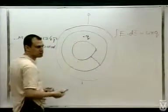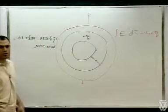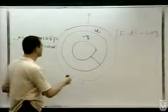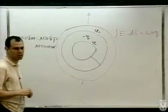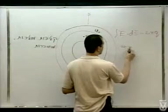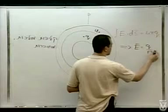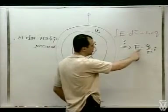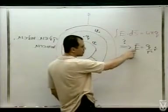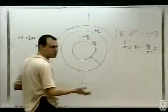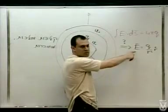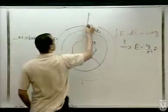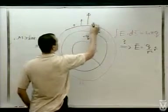אין פה סימטריה כדורית. המטען הזה מחוץ לסימטריה. אבל על הקליפה החיצונית יש פוטנציאל קבוע, ועל הפנימית יש אותו פוטנציאל. אי אפשר להסיק ישירות ש-E = Q/R² בכיוון R. זה שאיזשהו גודל האינטגרל שלו שווה משהו, לא אומר שום דבר על הגודל בכל נקודה.